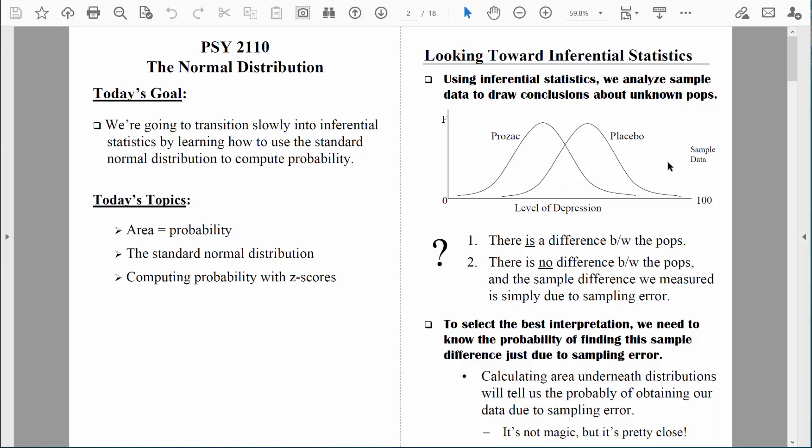What that means is that if we were to collect data from other samples, we would find other results. So in a sense, we can't fully trust these results because we didn't measure the entire population of depressed people.